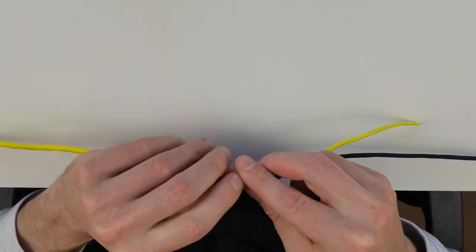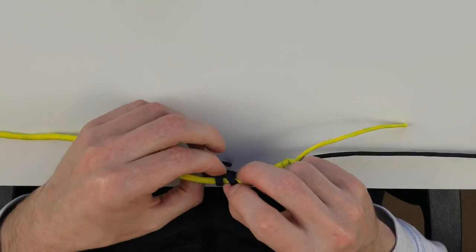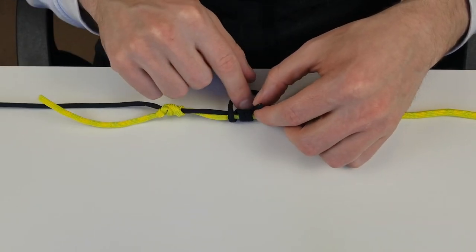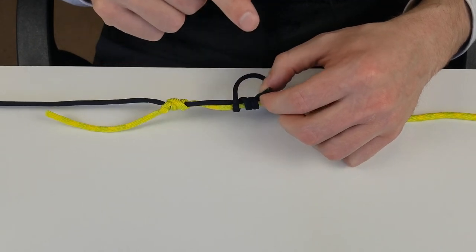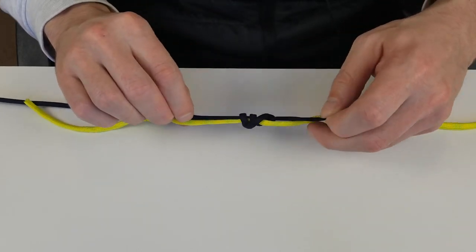We're going to take our line and wrap it eight times around. I can only do a couple just because I'm using thicker line here, but do eight with the braid. Then pull it tight.